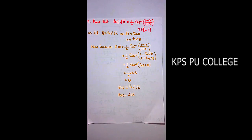Question 9: Prove that tan⁻¹(√x) equals ½ cos⁻¹((1-x)/(1+x)), where x belongs to the closed interval [0, 1].